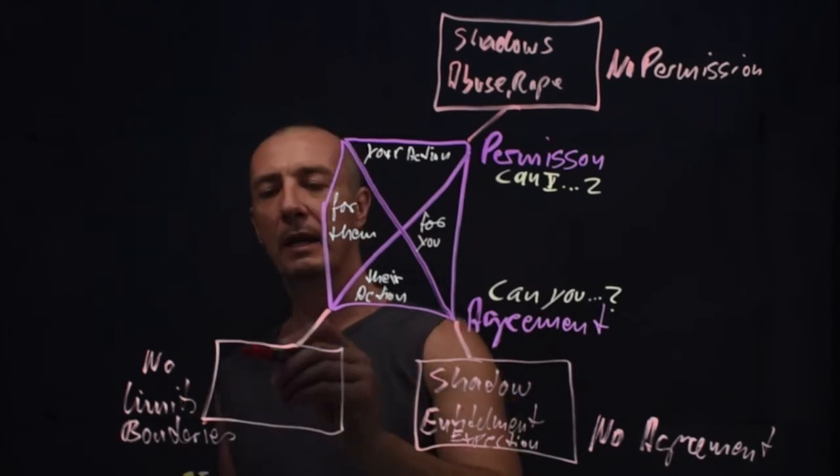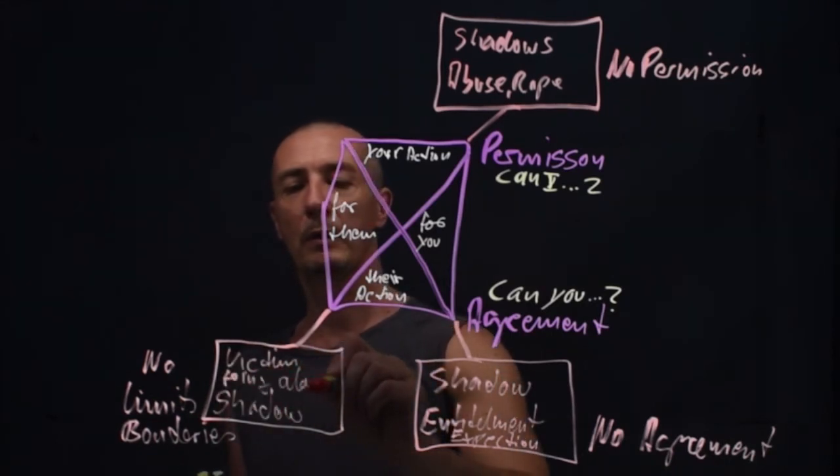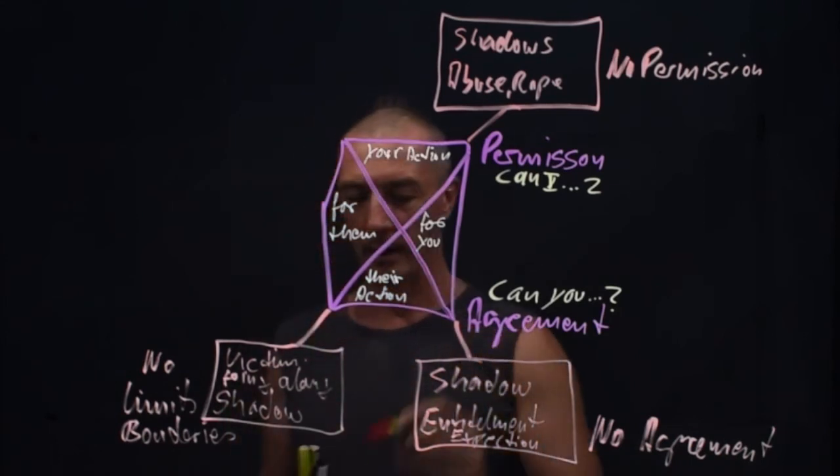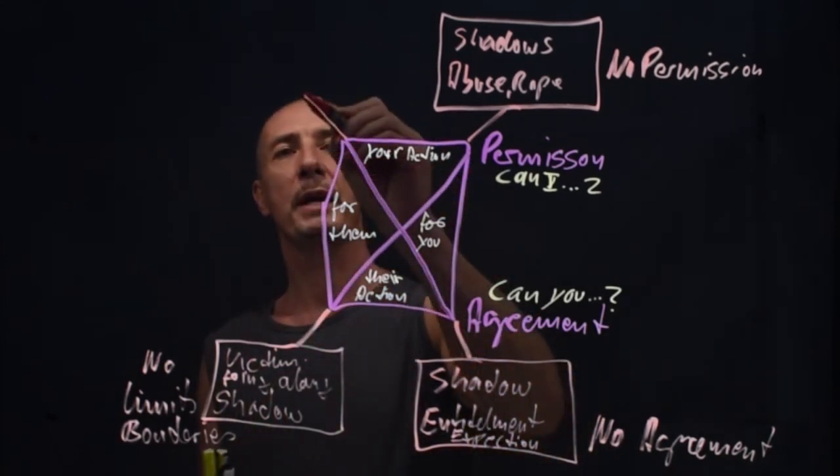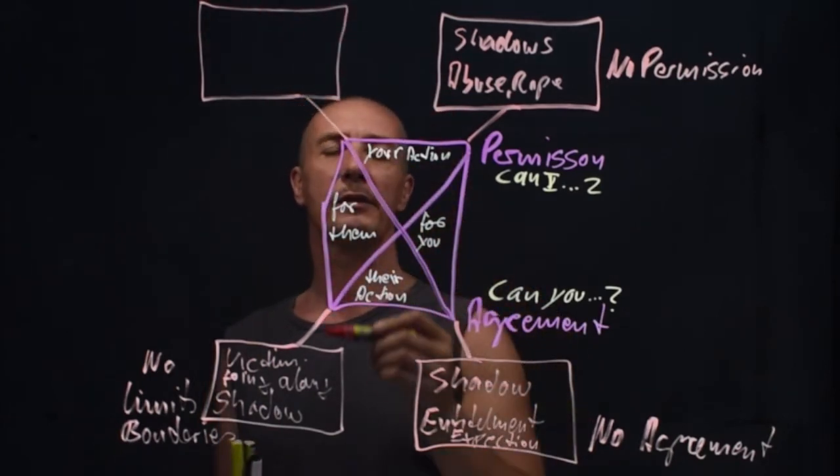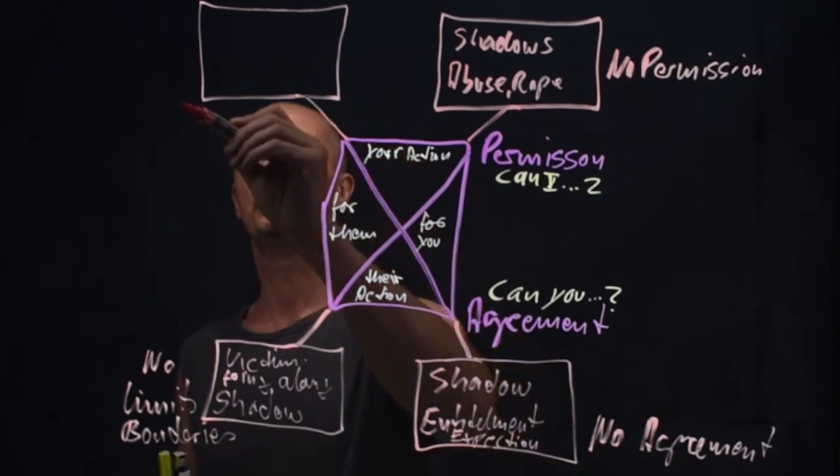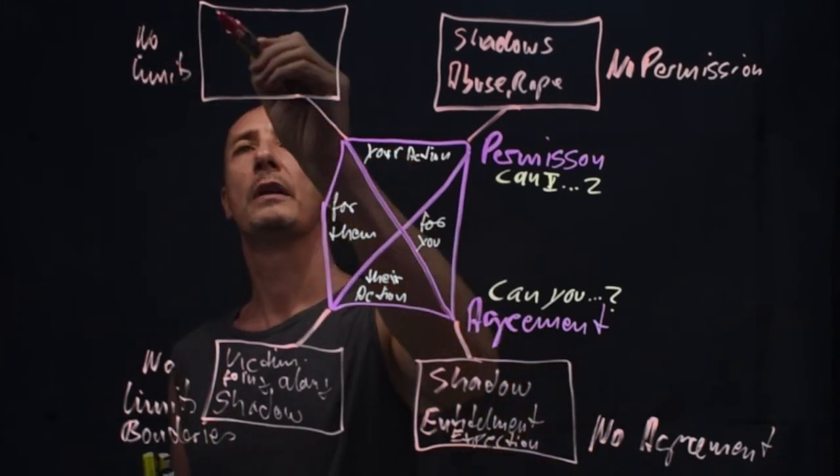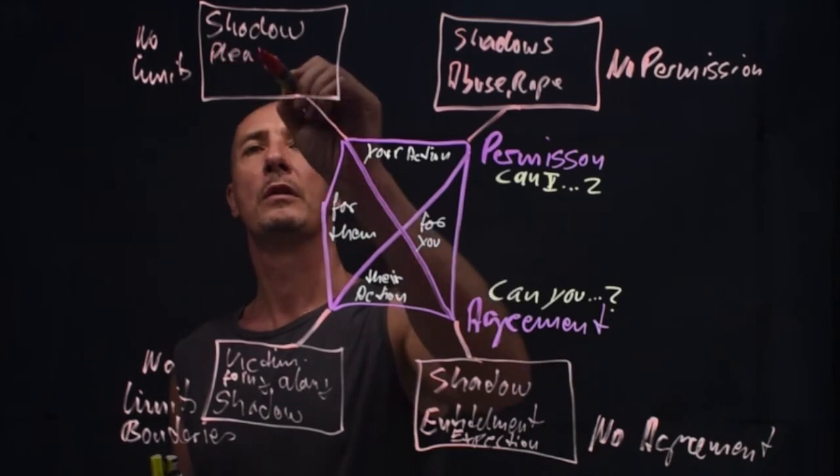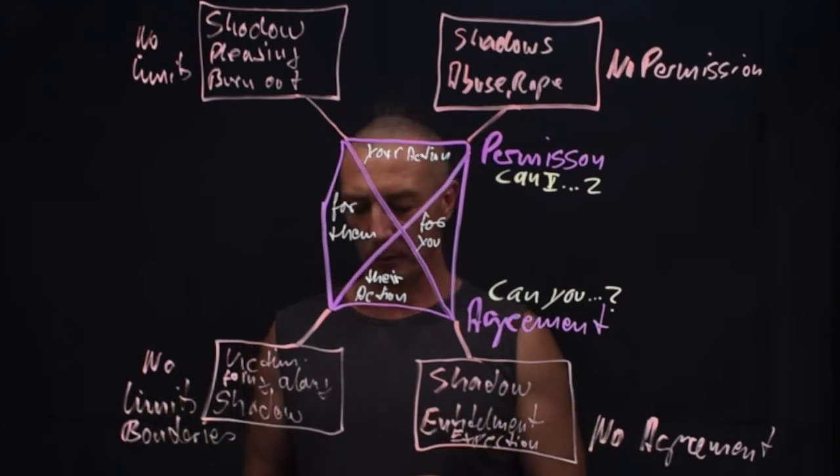The victim shadow going along. And then you have the shadow up here. If you're doing action for others and you don't have limits, so no limits here, shadow of pleasing or burnout. That's pretty much the somatic consent engagement system.